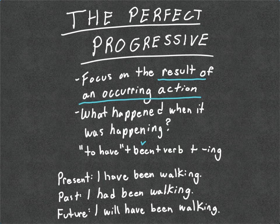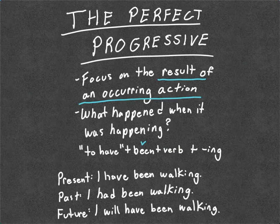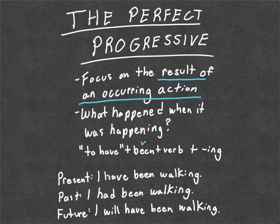You can maybe see it coming — it's the perfect progressive. The focus is on the result of an occurring action. We take the verb "to have" and conjugate it, add in the verb "been," then add our infinitive with ING. The result: I have been walking. I had been walking. I will have been walking. For example: "By 6 o'clock tonight, I will have been walking two hours." "I had been walking the streets for a while now" — and again, you're setting up another idea here.